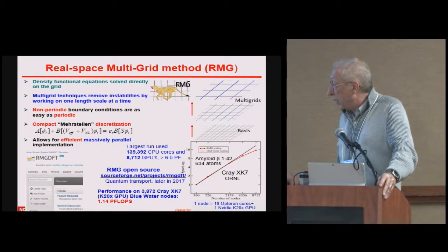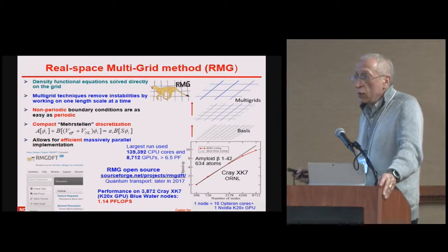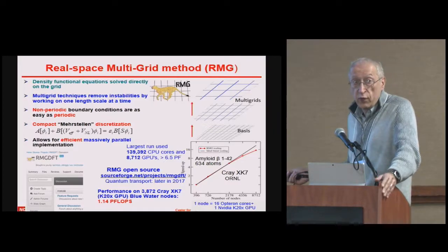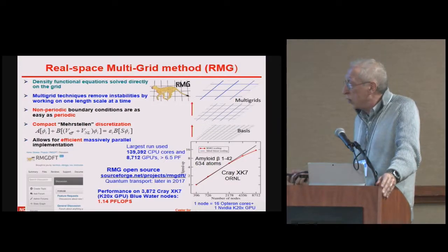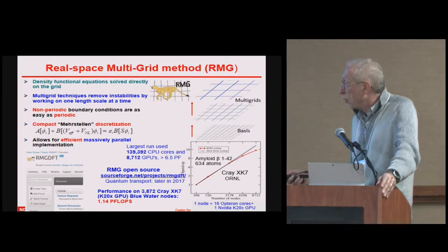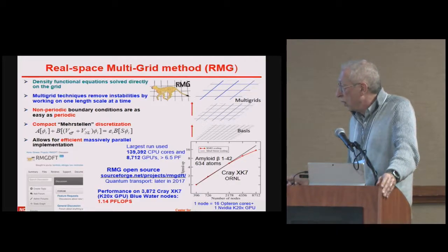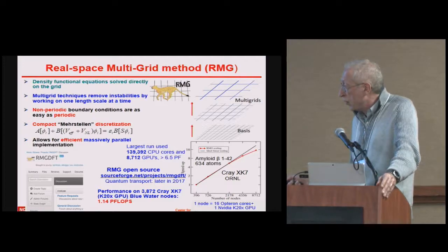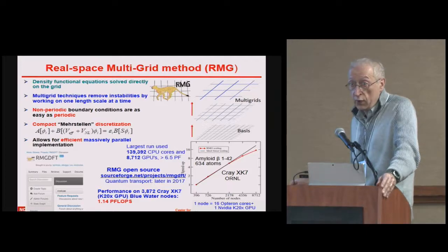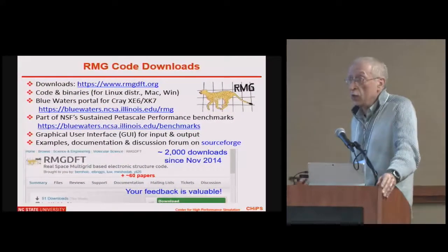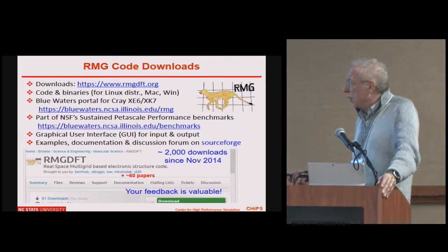The code is highly parallel. Here you see performance on a large number of nodes. It's open source. We have a quantum transport code that's going to be released later this year — we are hardening that code and making it more user-friendly. We have run on multi-petaflops. On fewer than 4,000 Cray XK7 nodes, we are already over a petaflop of sustained performance.